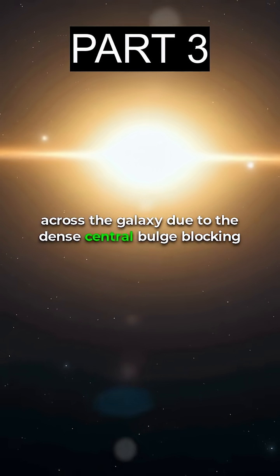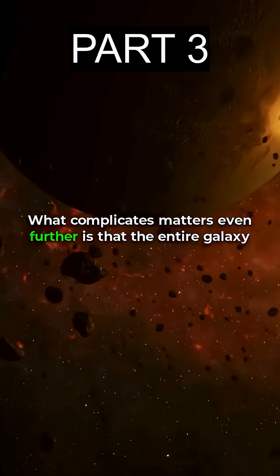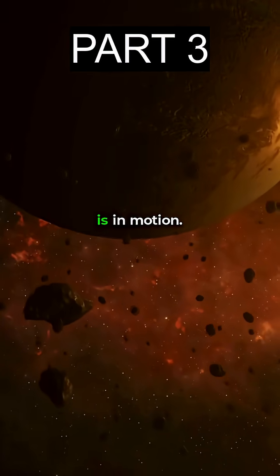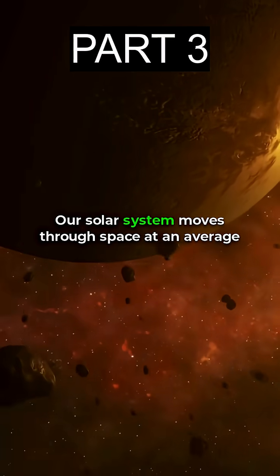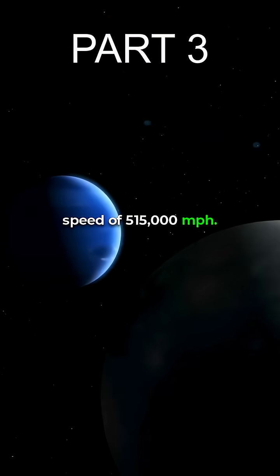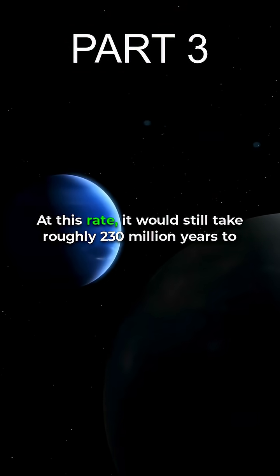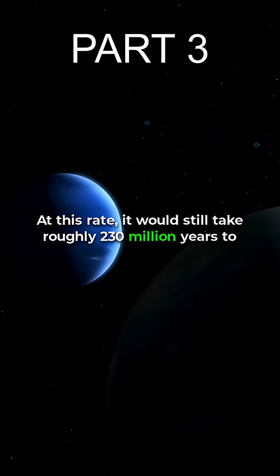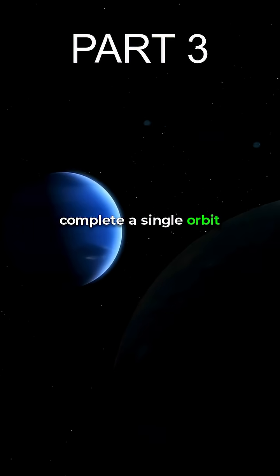Across the galaxy due to the dense central bulge blocking our view. What complicates matters even further is that the entire galaxy is in motion. Our solar system moves through space at an average speed of 515,000 miles per hour. At this rate, it would still take roughly 230 million years to complete a single orbit around the Milky Way.